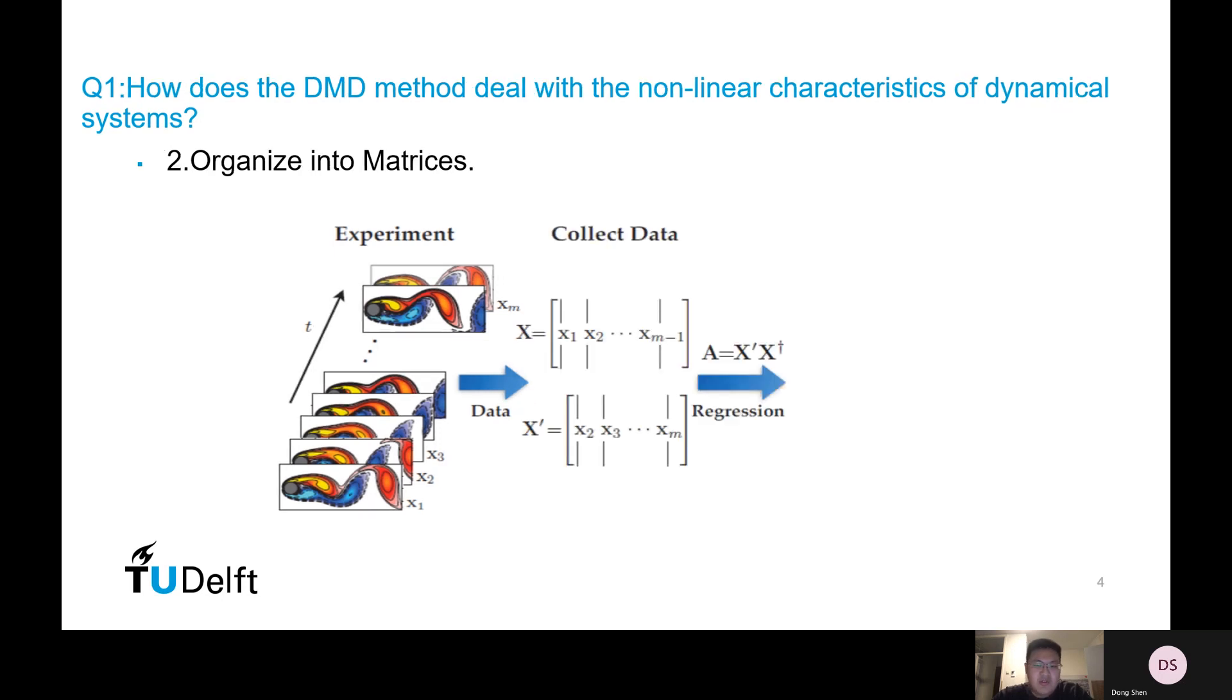Then we organize those data into two matrices, X and X'. As you can see here, X and X'. We call X the data matrix and X' the output matrix. As you can notice here, X' is actually just formed by moving every column in X one column left and add your last data point at the end.